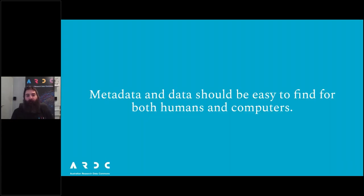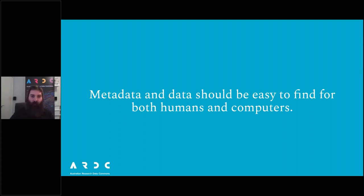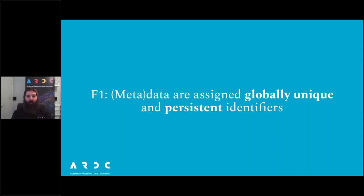Findable — F. To expand on that a little bit, metadata and data should be easy to find by both humans and computers. The Findable principle has been broken down further into four more specific guidelines. I'll be talking about one of those today, and then Liz will be covering the others on Wednesday. F1 is arguably the most important: metadata and data are assigned globally unique and persistent identifiers.